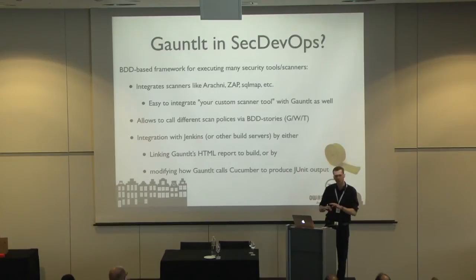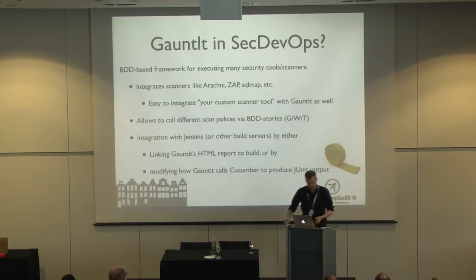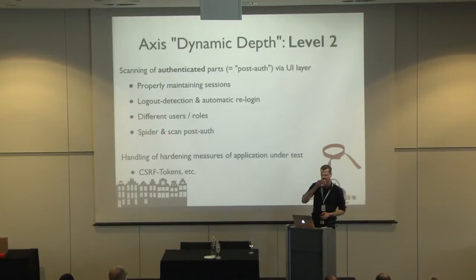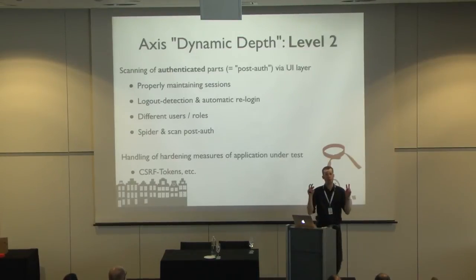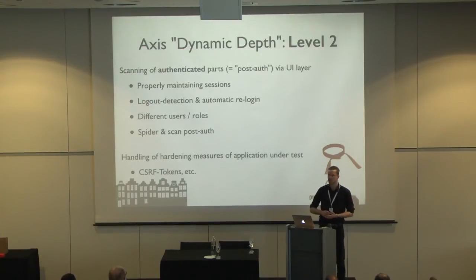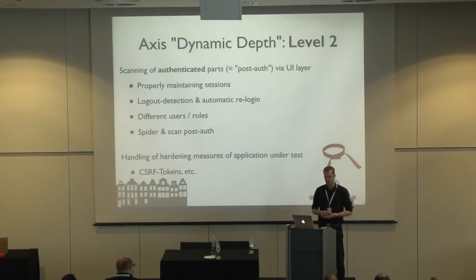Basically, this is all about the yellow belt — scanning the public attack surface. Having a tool, giving it a URL during the build job, running nightly, and seeing what it produces. So what about the next level — the orange belt, level two? That's basically about scanning into the authenticated parts of the application via the user interface layer — scanning post-auth and deeper into the application's attack surface than only the public parts.